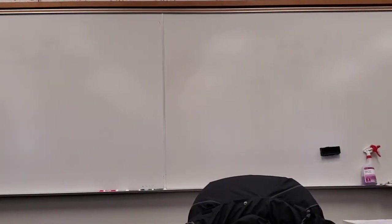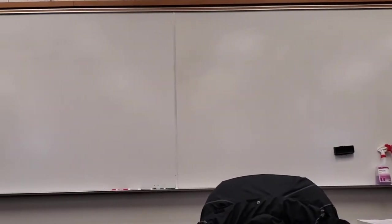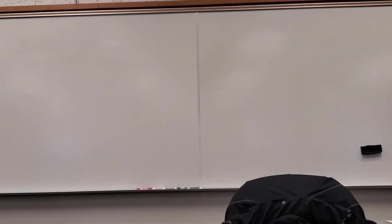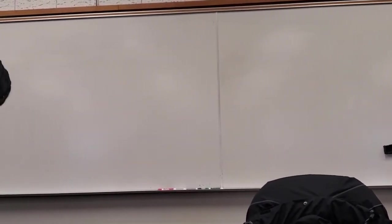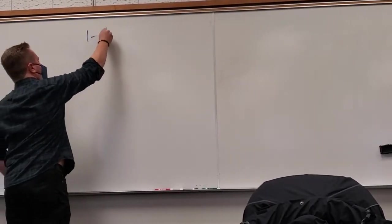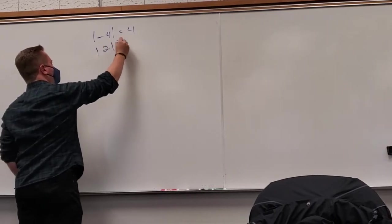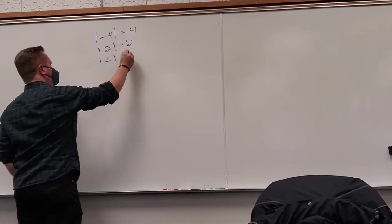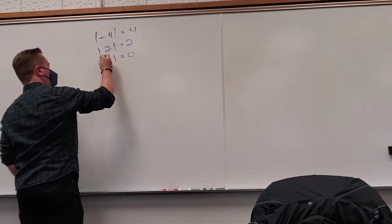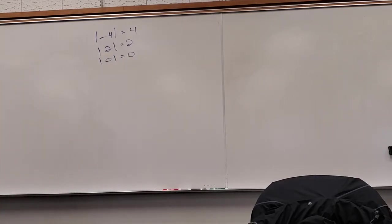If it's already positive, it leaves it alone. For example, absolute value of negative four is four, absolute value of two is two, absolute value of zero is zero — that's the only thing that does not become positive. Why does it always make things positive? What idea is it based on?